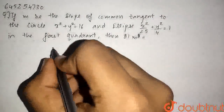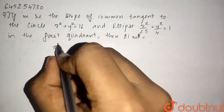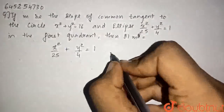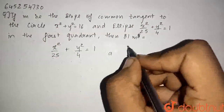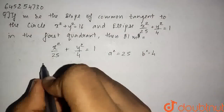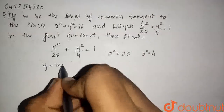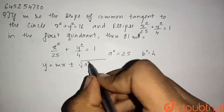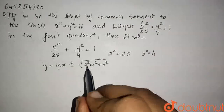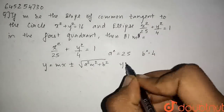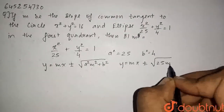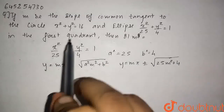Firstly, we will find the general equation of the tangent to the ellipse. So x²/25 + y²/4 = 1. Comparing with x²/a² + y²/b², we get a² = 25 and b² = 4. Therefore the general equation of the tangent is y = mx ± √(a²m² + b²), where m is the slope. Putting a² = 25 and b² = 4, we get y = mx ± √(25m² + 4). This is the equation of the tangent to the ellipse.